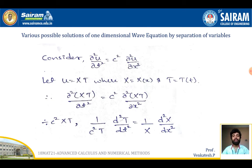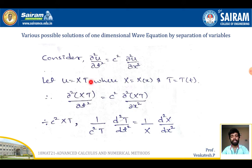First, I am going to discuss the various possible solutions of the one-dimensional wave equation by using separation of variables. For this, I am going to take the one-dimensional wave equation: ∂²u/∂t² = c² · ∂²u/∂x². The first step is to assume the solution of the wave equation in the form u = X·T, where capital X is a function of small x and capital T is a function of small t.